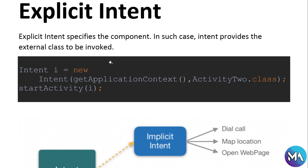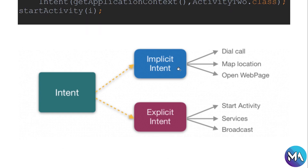As a summary: intent has implicit and explicit types. Implicit intents are used for actions like dialing a call, opening a map location, or opening a web page. Explicit intents are used to start activities, receivers, services, and broadcasts within your app.